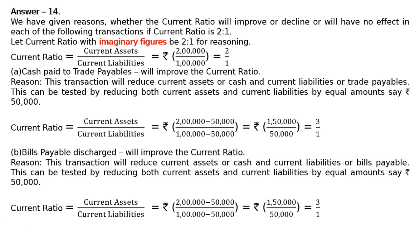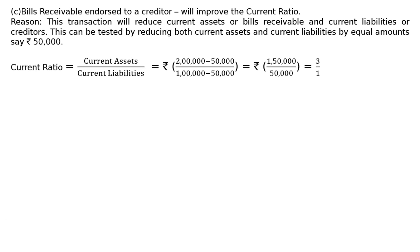Part C: Bills receivable endorsed to a creditor. If bills receivable are endorsed to a creditor, the current ratio will improve. Reason: this reduces current assets (bills receivable) and current liabilities (creditors) equally. Tested by deducting Rs. 50,000 from both: Current ratio = (Rs. 2 lakh − Rs. 50,000) / (Rs. 1 lakh − Rs. 50,000) = Rs. 1,50,000 / Rs. 50,000 = 3:1. Hence the ratio will improve.